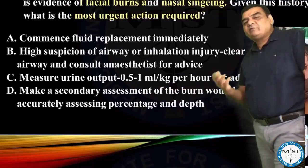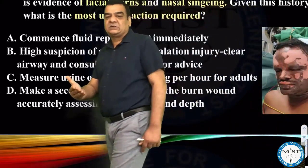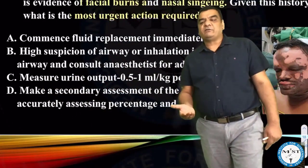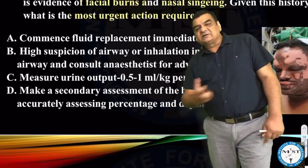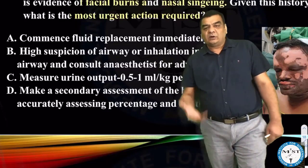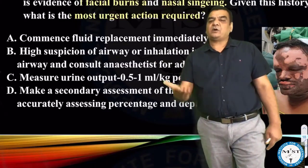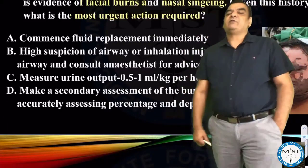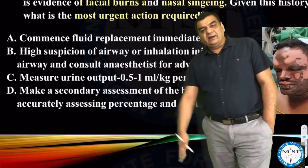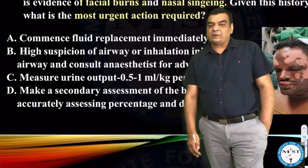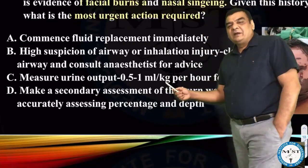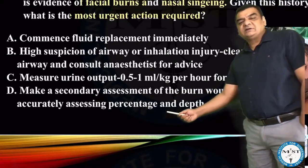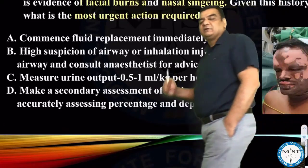Option C: measure the urine output. Yes, we have to measure urine output because when we are pumping in fluids, we need to monitor whether the amount of fluid being given is correct. Adequate urine output is more than 0.5 ml per kg per hour for an adult, 1 ml per kg per hour for children, and more than 2 ml per kg per hour for an infant. But that comes once we have started giving fluids. Option D: make a secondary assessment of the burn wound, accurately assessing percentage and depth — that is also required.